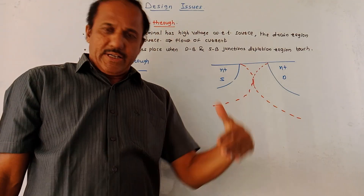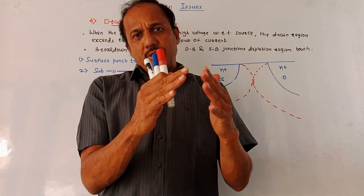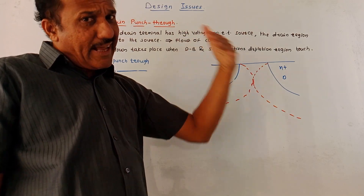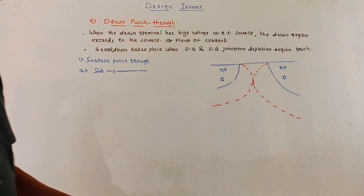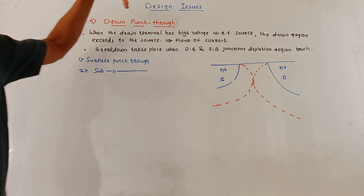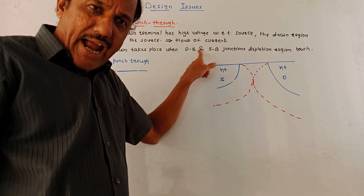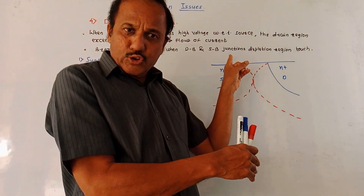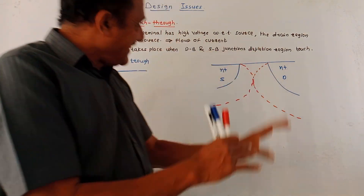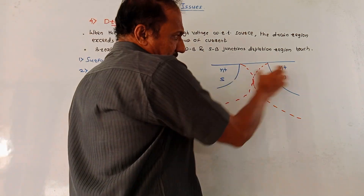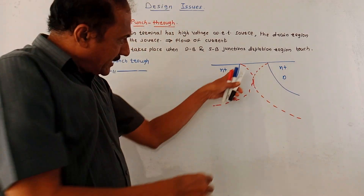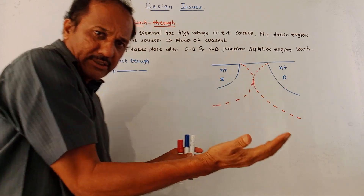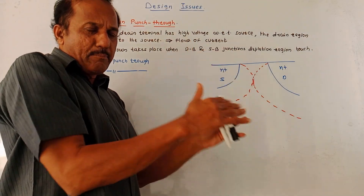The last effect is the drain punch through effect. This effect is related to the touching of two depletion regions. When the drain terminal has high voltage with respect to the source terminal, the drain depletion region expands and may enter into the source region, causing current to flow. Breakdown takes place when the drain-body (DB) and source-body (SB) junction depletion regions touch each other. As shown in the diagram, the depletion region on the source side and the depletion region on the drain side touch at a point, causing current to flow — this is the breakdown.